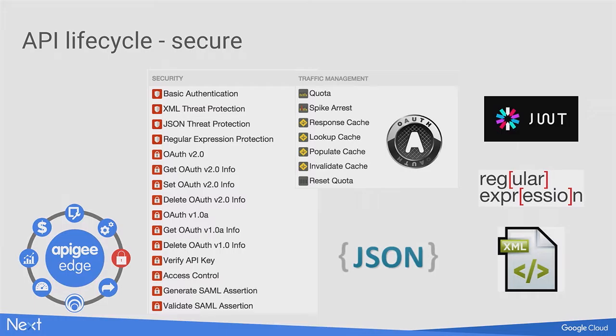My API still has no security, and that's no good. I've read about OAuth — it's one of the de facto standards for API authentication. How can I add those things without having to learn all the complexities of the spec myself? OAuth 2.0 is a very popular API security standard, and in this segment we're going to take a look at how we take this API and protect it using an OAuth policy.